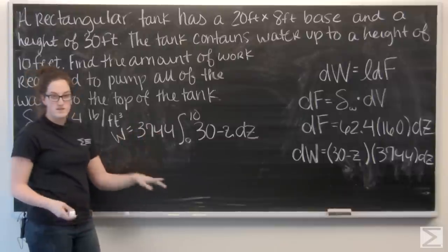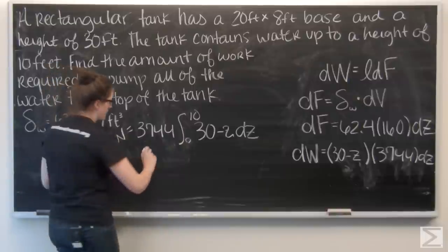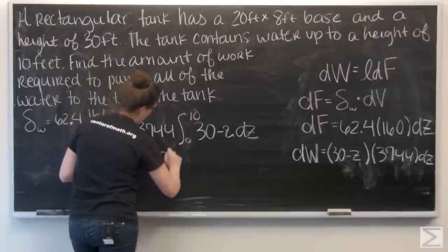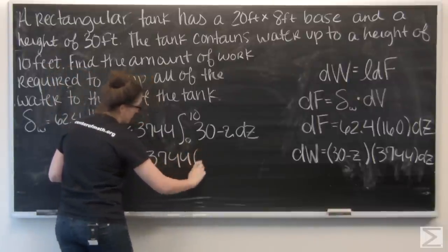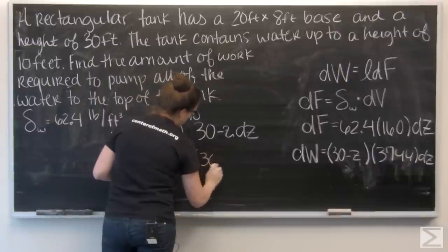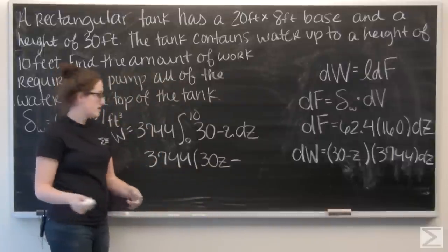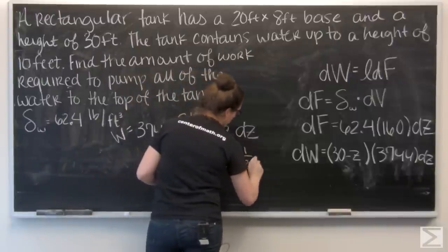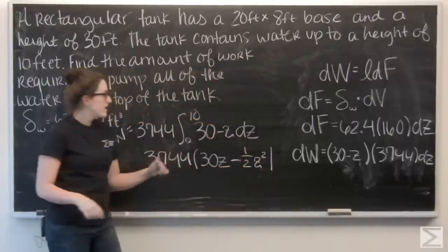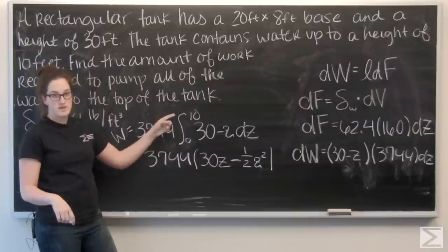So, now let's go ahead and integrate with respect to z. 30 is like a constant. So, when I integrate 30, I'm going to get 30z. And then, when I integrate z, I'm going to get 1 half z squared.